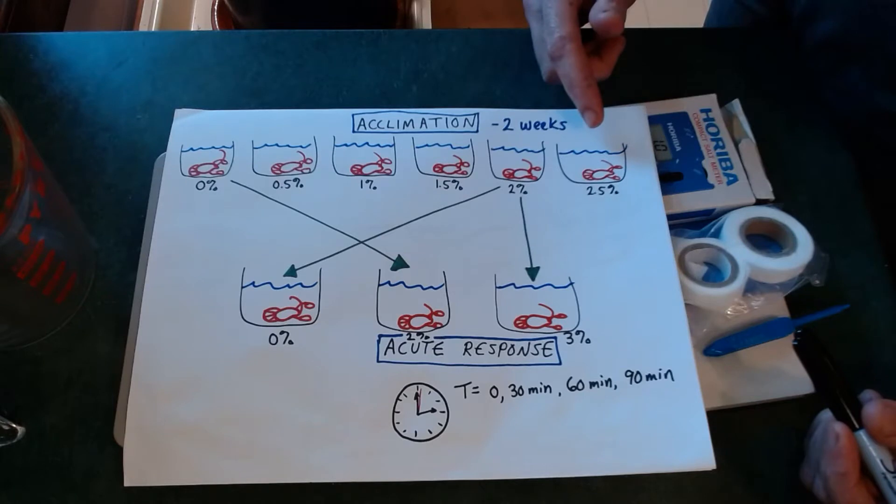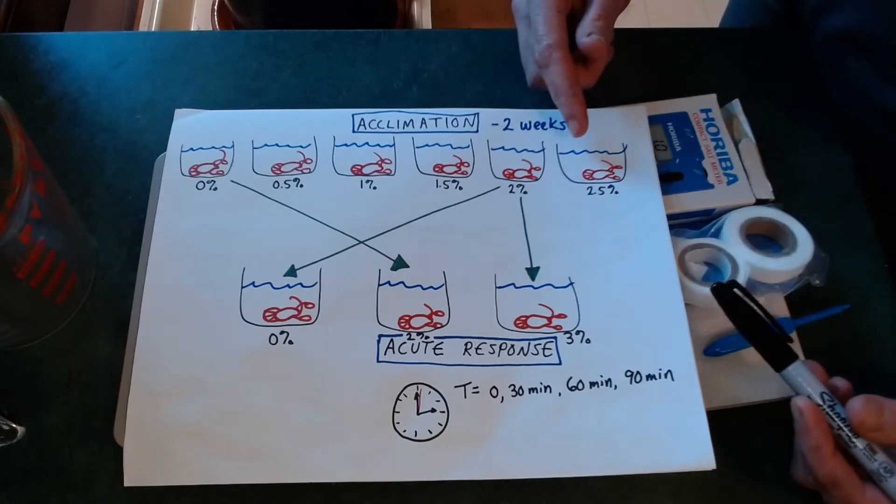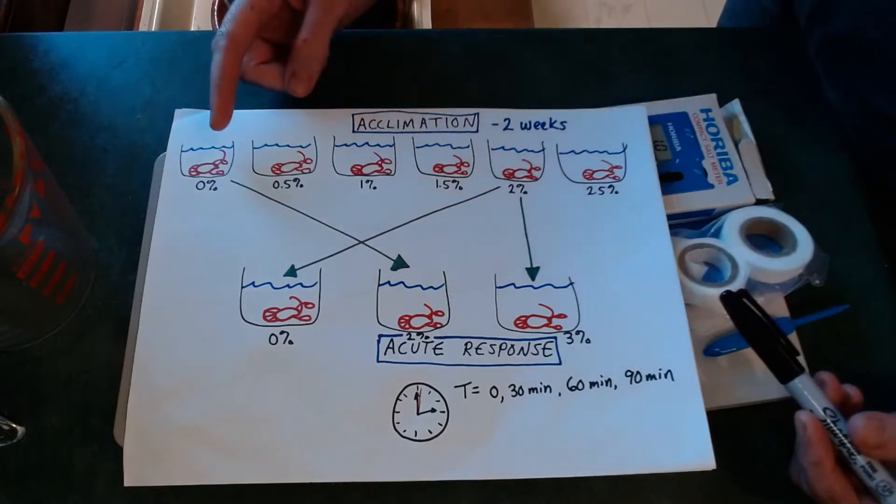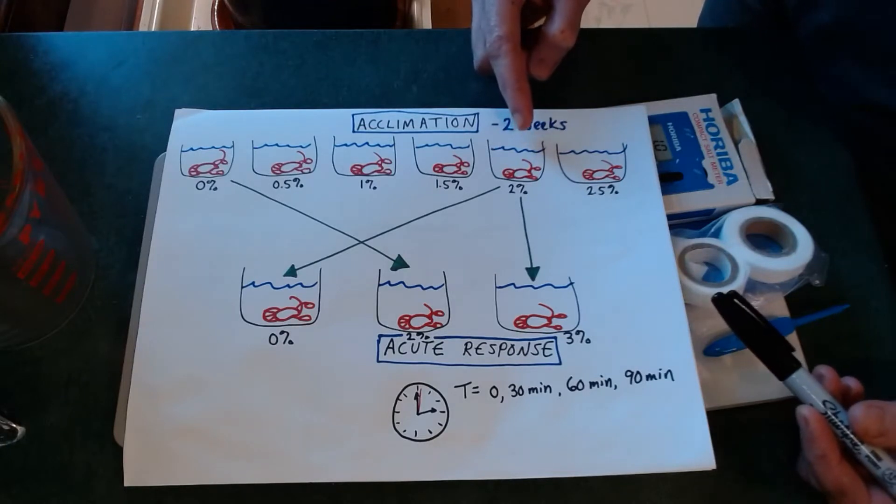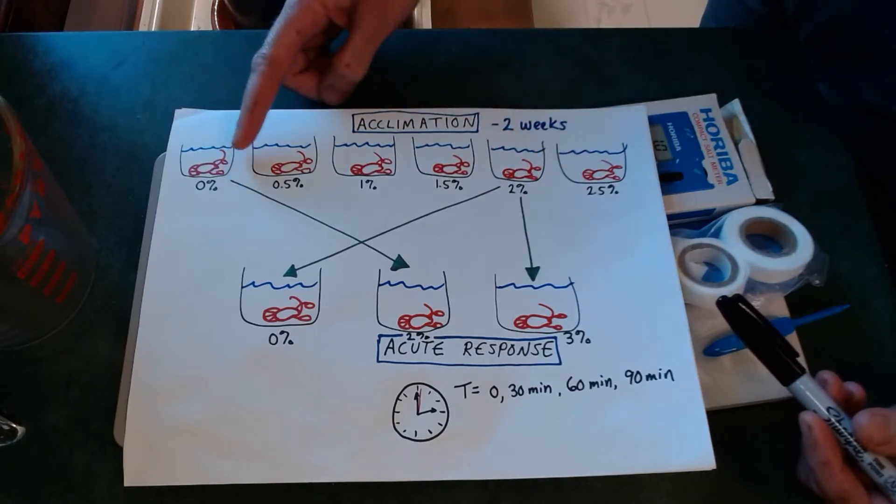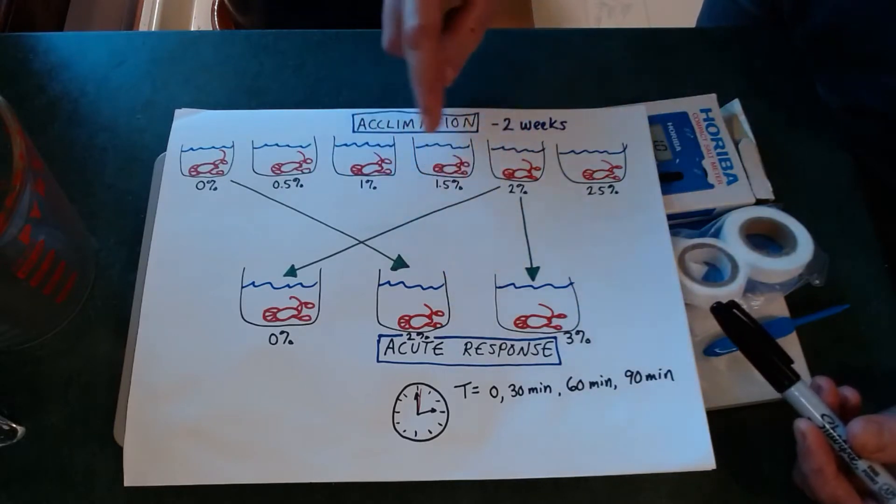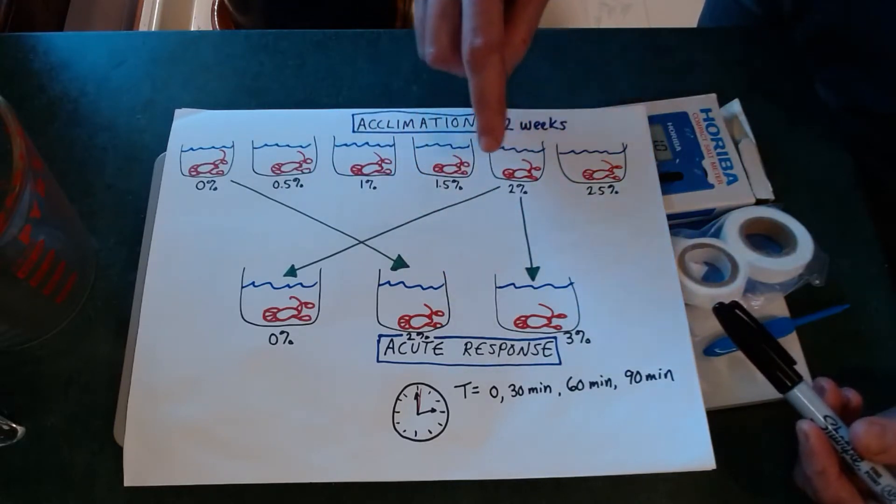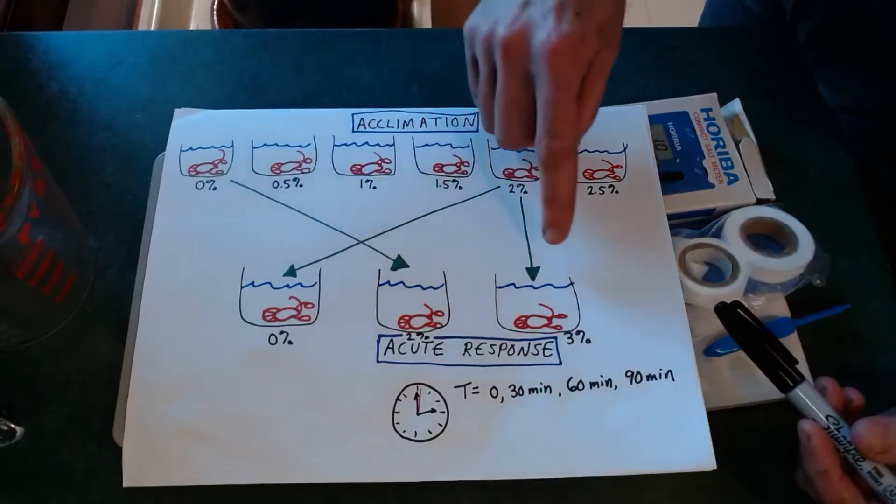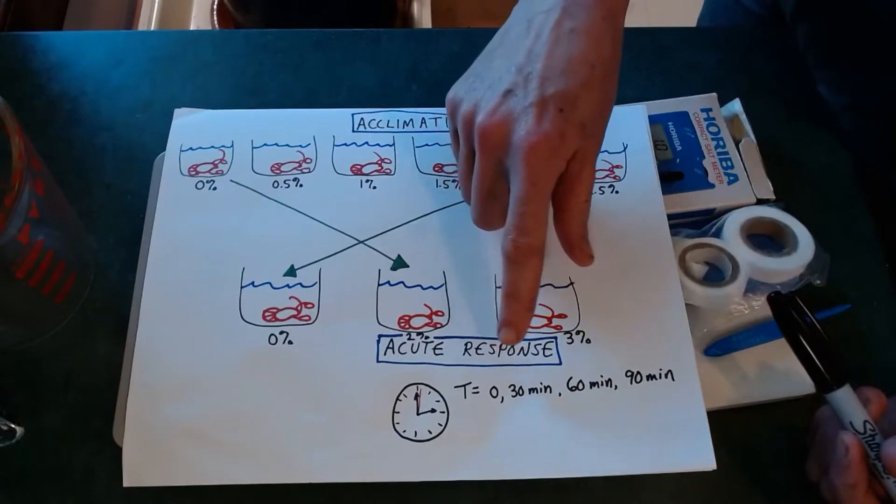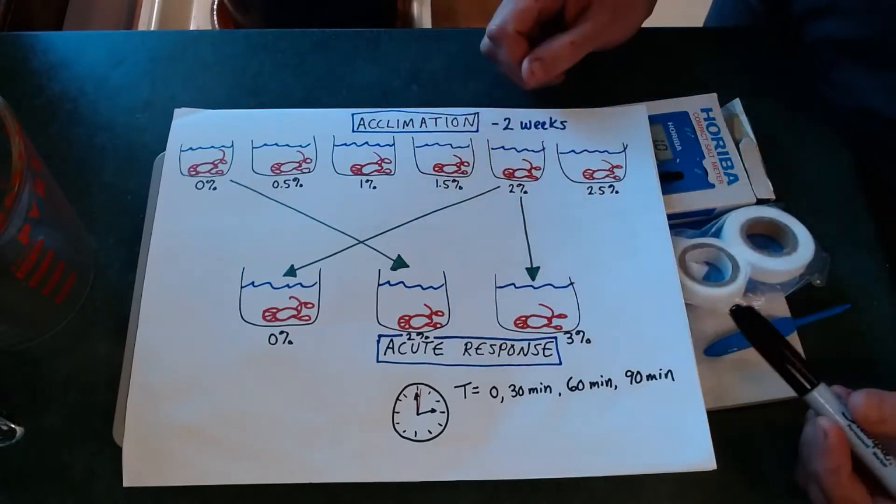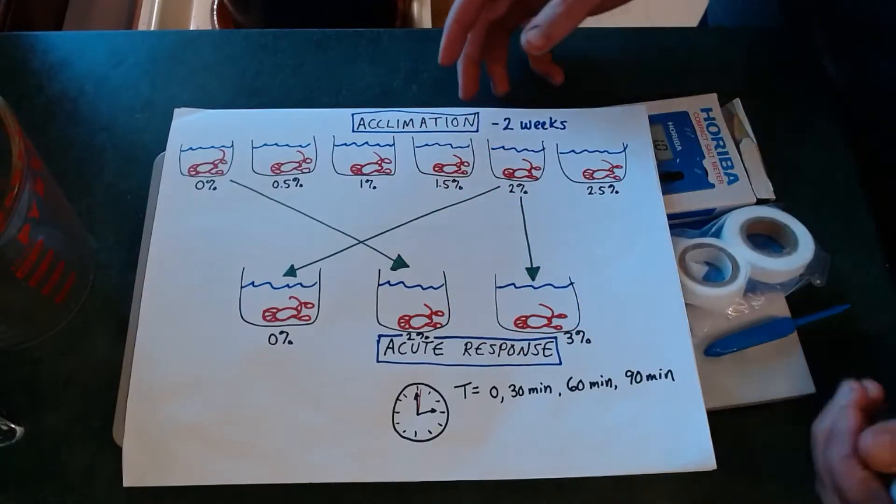Then we're also going to set up a test of crayfish acute responses to salinity. So we're going to take crayfish that were originally acclimated at either zero percent or at two percent salinity and we're going to expose them to a change in condition. So the zero percent crayfish we're going to get exposed to two percent salinity and then the two percent crayfish we're going to get exposed either to zero percent or to three percent salinity. And then we're going to track a couple of characteristics through time. So their body mass and then changes in sodium and chloride content.